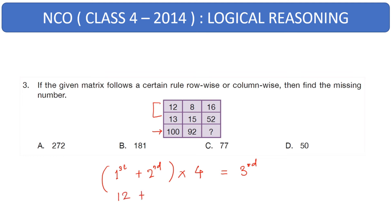Let's try it out. So, 12 plus 13 into 4, which is nothing but 25 times 4, that gives us 100. That is true for the first one. Let's try the second one. That will be 8 plus 15 times 4. 8 plus 15 is 23 times 4 is equal to 92. Our second one is right. Hence, based on that, we will just calculate 16 plus 52 times 4. That is 68 times 4, which will give us 272. So this is your answer.